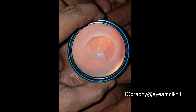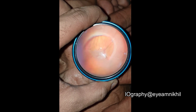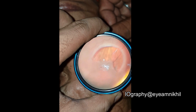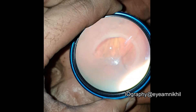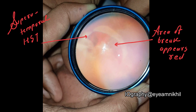What you see here is a large infero-temporal horseshoe tear in the right eye of the patient. This is another horseshoe tear located supero-temporally in the right eye. As you can see, the area of the break appears red because of the color contrast between the sensory retina and the underlying choroid.